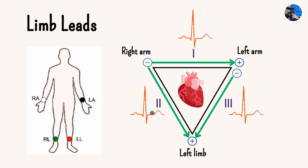For the most part, when we look at leads 1, 2 and 3 on the ECG, we want to see a P wave going up, a Q wave — a slight downward deflection, or nothing. We also have the R wave going up, the S wave coming down, and then the T wave also pointing upward. So leads 1, 2 and 3 should all vaguely show that same pattern.